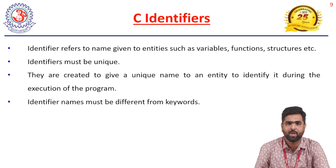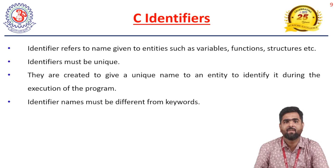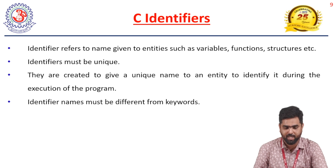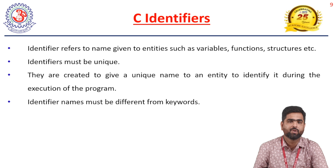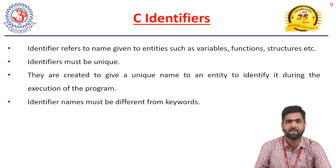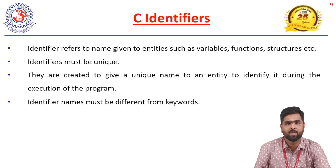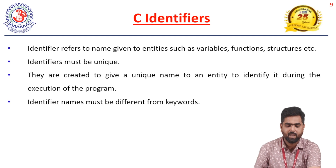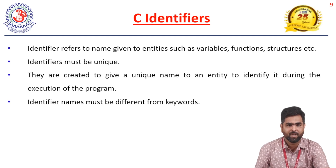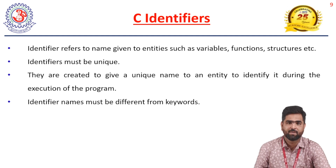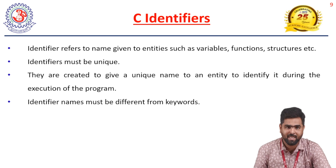Identifiers must be unique. For example, in a program with a variable, a function, and a structure, you cannot use the same name for all three — all names must be unique. Identifiers are created to give a unique name to an entity to identify it during program execution. If you do not give a unique name, there will be a conflict during compilation or execution. Also, identifier names must be different from keywords, since keywords are reserved words.